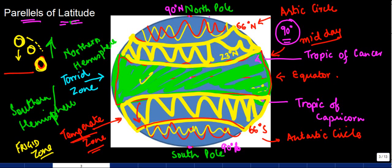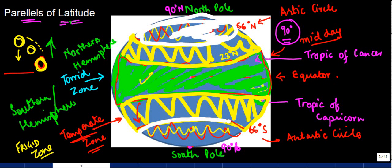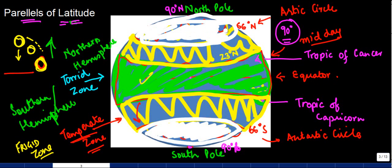So beyond the Arctic Circle up to the North Pole and beyond the Antarctic Circle up to the South Pole - so effectively what I'm referring to is these two areas. There's a lot of ice over here, that's why I've painted it white. These are known as the frigid zones.